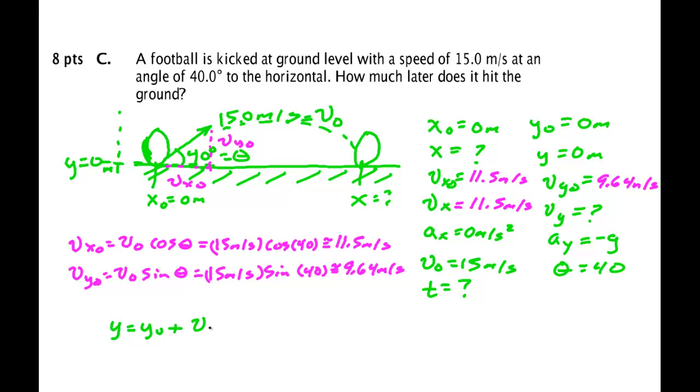One of those equations is that Y is equal to Y not plus V Y not T plus one half acceleration in Y times time squared. But final location in Y is 0, and the initial location in Y was 0. So we mark those two out. We have 0 is equal to V Y not minus G over 2 times T times T, where I factored out a time.